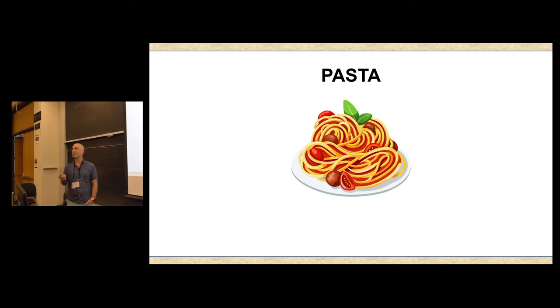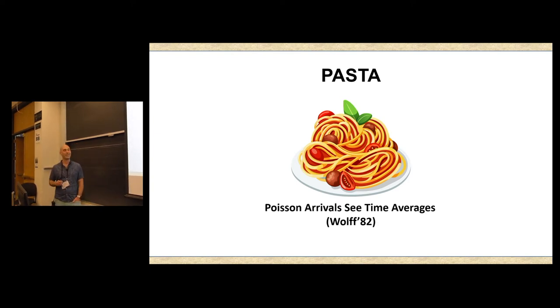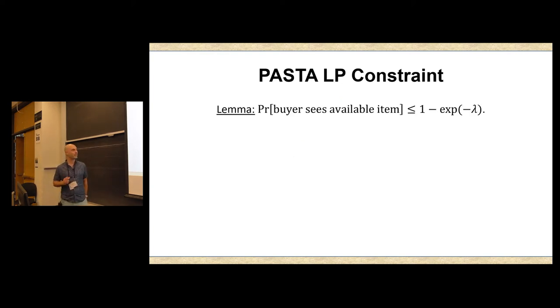And for that to sell our foodstuffs, we'll think about a different foodstuff, namely pasta. For those of you who are familiar with the queuing theory literature, know what the acronym I'm referring to is. So what PASTA says is that Poisson arrivals see time averages. If you look at a long enough time horizon, what Poisson arrivals that are independent of what happened so far see is going to be exactly the long time average. So let's derive a constraint based on this classic queuing theoretic result.